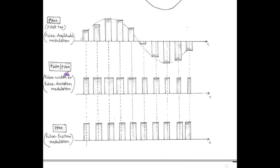In PWM or PDM, position and amplitude remain constant, only the width or duration changes. And in pulse position modulation, or PPM, both amplitude and width remain constant; only there is a variation in the position of each pulse.